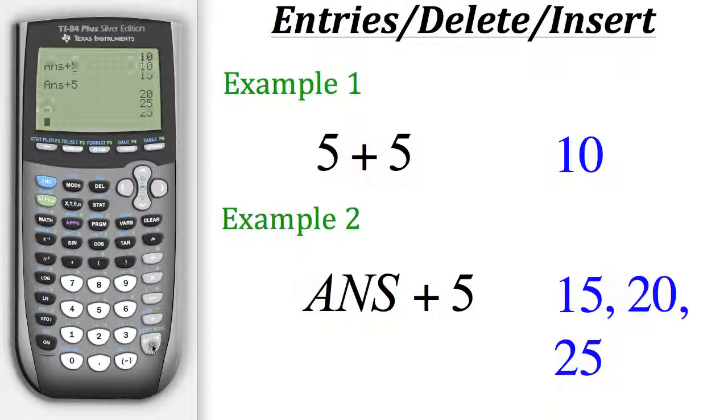And we could keep hitting enter from there and the calculator will continue to add 5 to our previous result since that's what our last entry was, take the previous answer and then add 5 to it. Now let's take a look at another example.